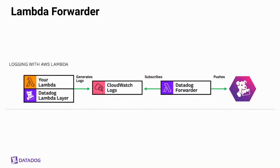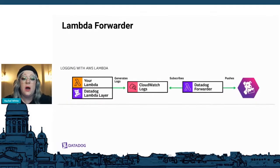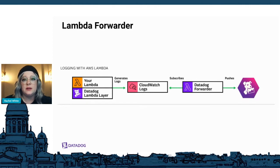For logs, Datadog's Lambda layer automatically forwards CloudWatch logs to the forwarder, which then pushes them to Datadog. The forwarder can send logs and other telemetry to your account, such as Amazon S3 events and Kinesis data stream events. Deploying the forwarder via CloudFormation is recommended, as AWS will automatically create the Lambda function with the appropriate role. Add Datadog's Lambda layer and create relevant tags like function name, region, and account ID. You can let Datadog automatically set up triggers, or manually set them up to forward data from S3 buckets or CloudWatch log groups.